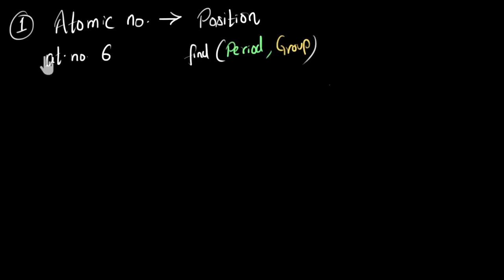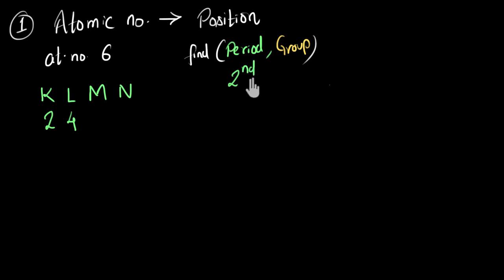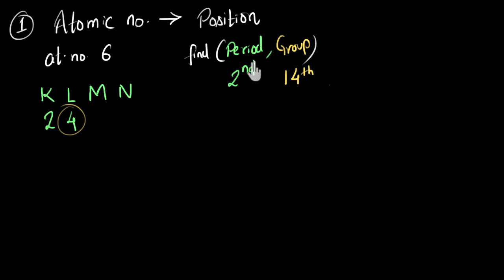Now let's try a similar problem. The element has atomic number 6; we have to find its period number and group number. The first step is to write its electronic configuration. K shell gets maximum two electrons — so two are placed there, leaving four. All four remaining electrons go to the L shell, which has a maximum occupancy of eight. We can see that only two shells have electrons, so this element belongs to the second period. For the group number, we look at the valence electrons: four valence electrons. Since four is greater than two, group number = 10 + 4 = 14. So our element belongs to the second period and the fourteenth group.